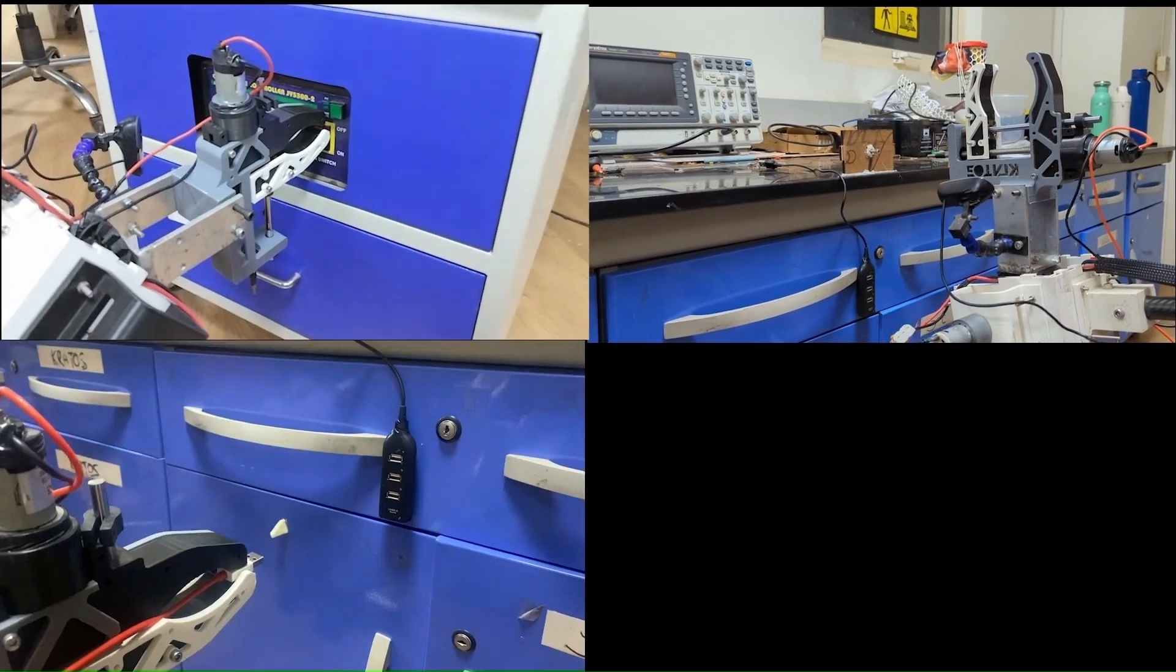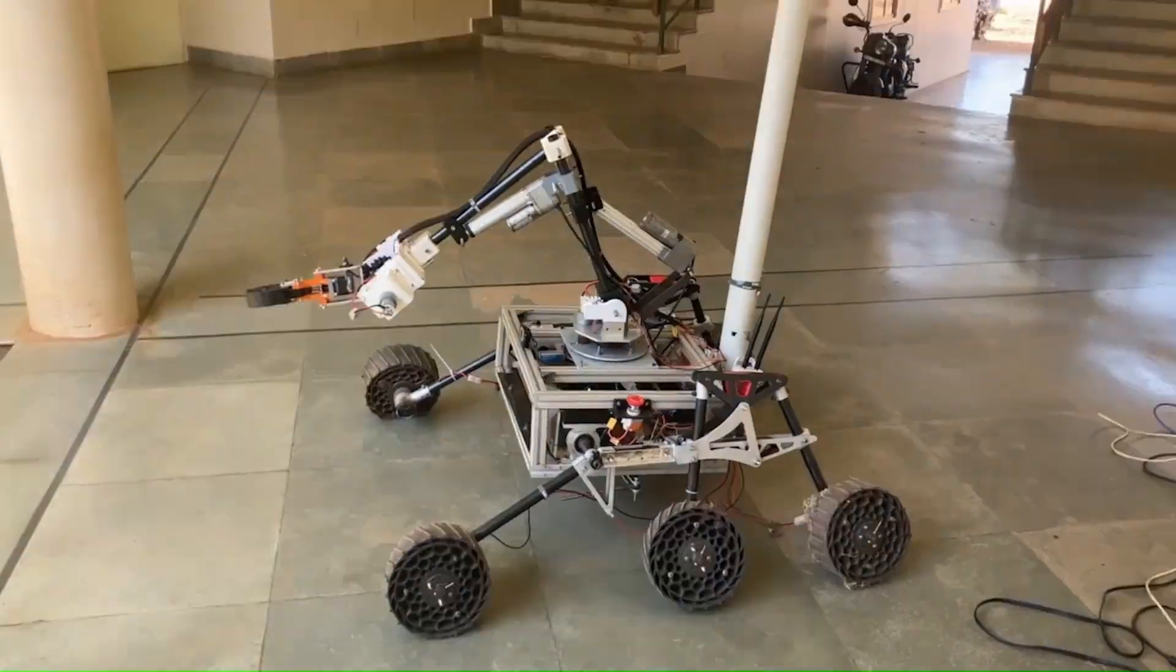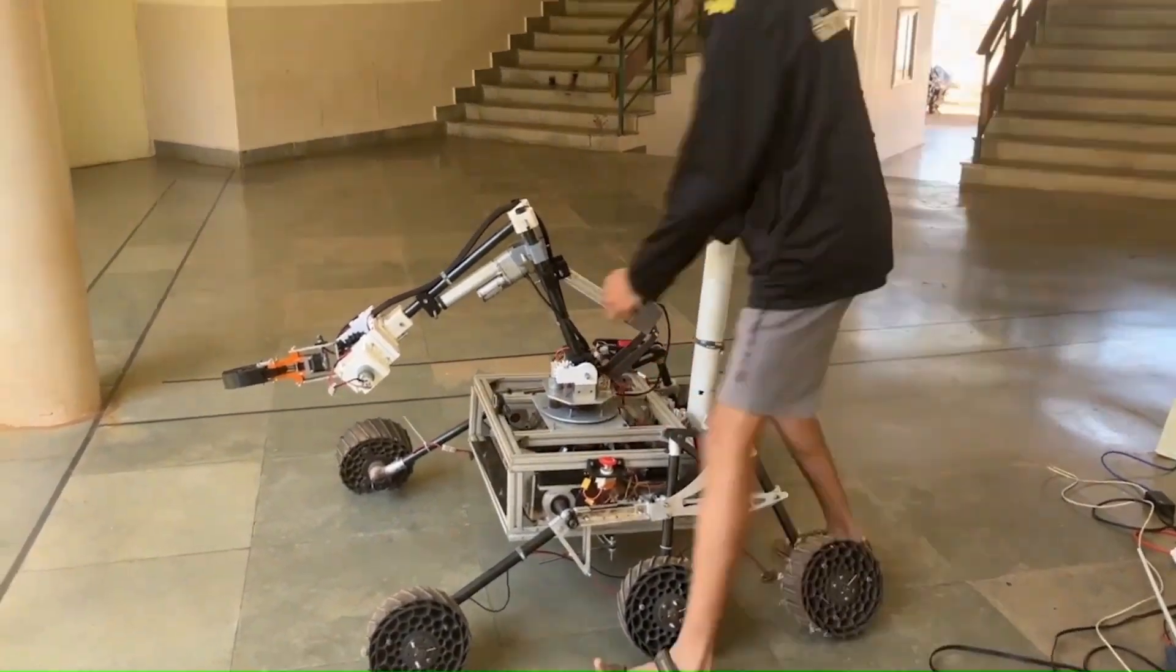With the new arm setup, the rover can perform tasks like flipping switches, pushing buttons, screwing bolts, inserting a USB stick and opening drawers with ease. The rover can seamlessly switch from arm-based tasks to autonomous tasks in less than 2 minutes.